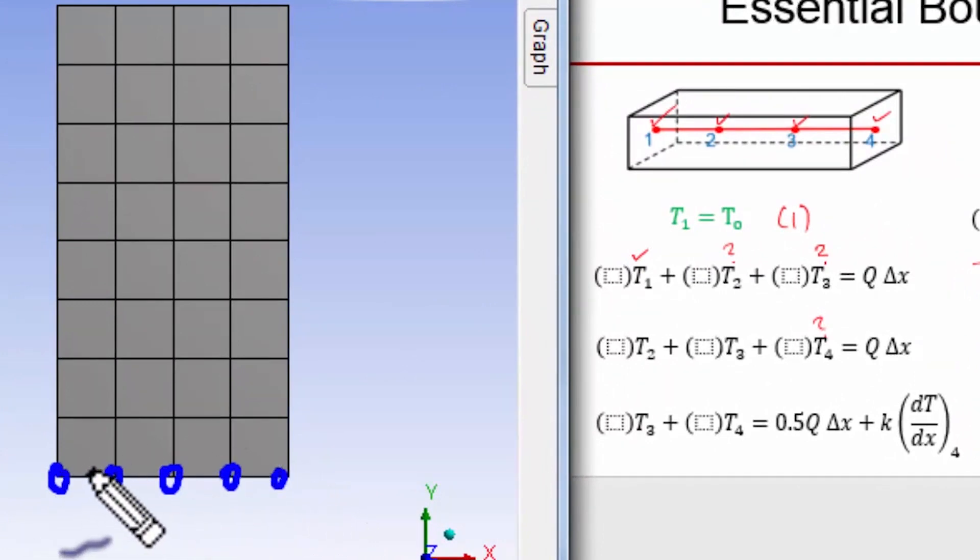And then we also have the mid-side nodes, so it will assign the temperature boundary condition for these nine values. They will be set to one degree C, and you can see that the essential boundary condition will be satisfied exactly.